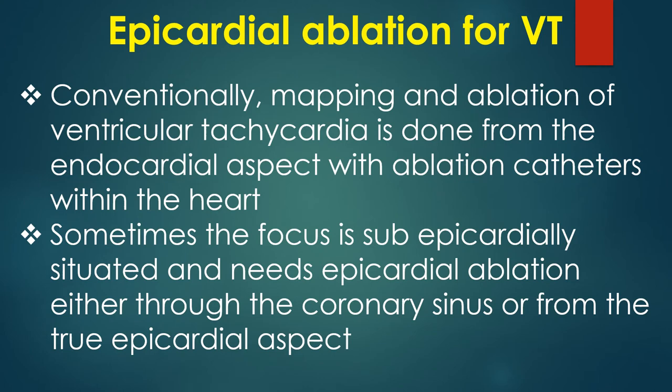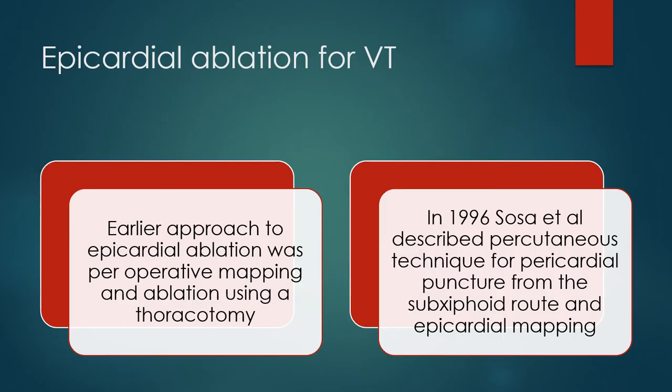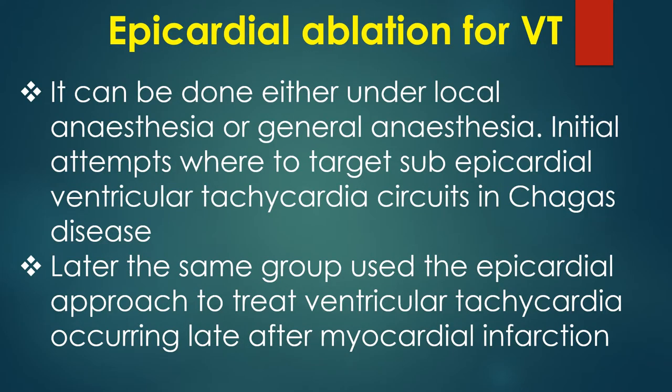Conventionally, mapping and ablation of ventricular tachycardia is done from the endocardial aspect. Sometimes the focus is subepicardially situated and needs epicardial ablation either through the coronary sinus or from the true epicardial aspect. Earlier approach was peroperative mapping and ablation using a thoracotomy. In 1996, Sosa and colleagues described a percutaneous technique for pericardial puncture from the subxiphoid route and epicardial mapping, performed under local or general anesthesia. Initial attempts targeted subepicardial ventricular tachycardia circuits in Chagas disease.